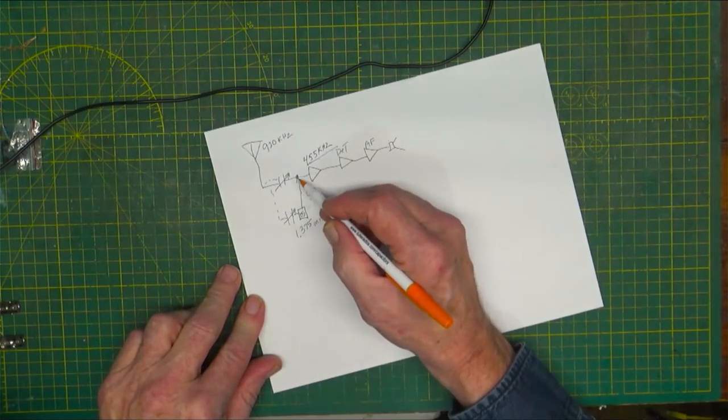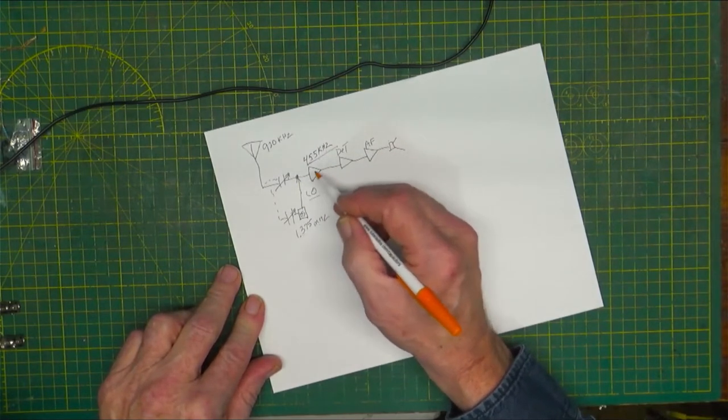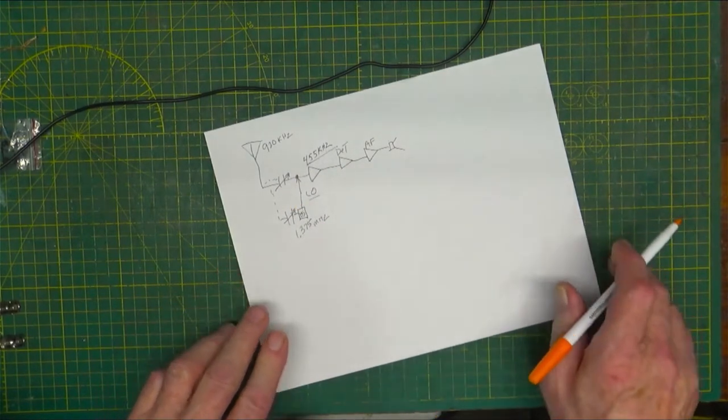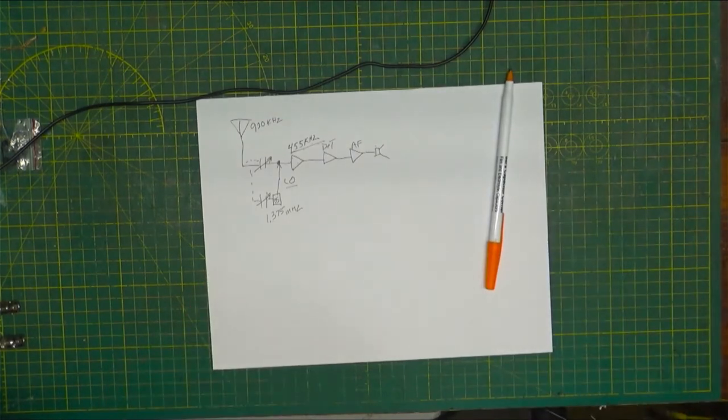We're going to make the simplest AM radio that you can make with a couple of things on the bench. So that's the way it works. So what I want to show you here is if we bring up the spectrum analyzer.